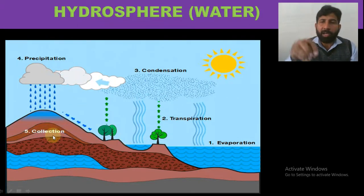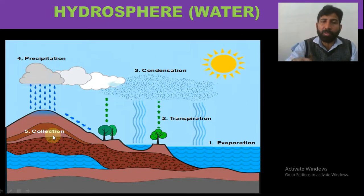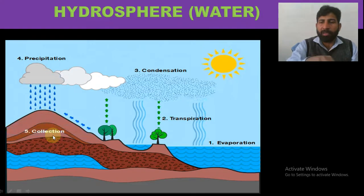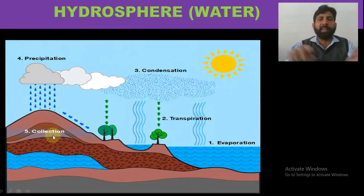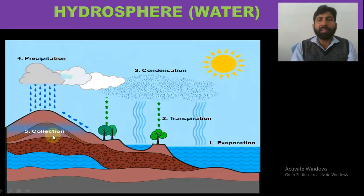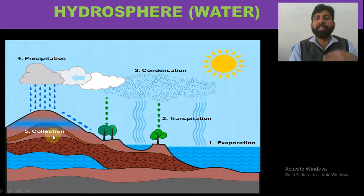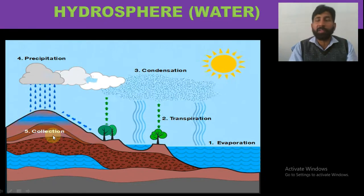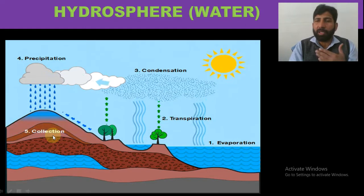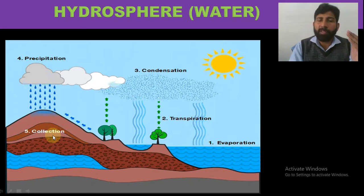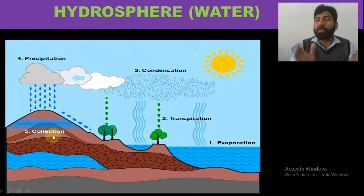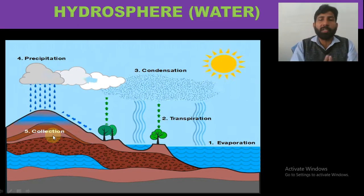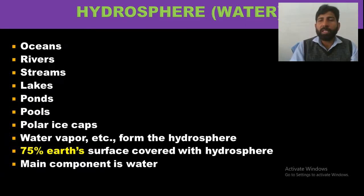Precipitation water goes to water bodies, is absorbed by plants, and can also be stored under the soil. This is the whole hydrosphere cycle — it is a continuous process that can never be stopped. When it is affected — due to limited water bodies, limited trees, less transpiration and less evaporation — fewer clouds form, less precipitation occurs, and the whole environment becomes severely affected. No water means no life.